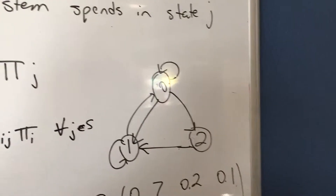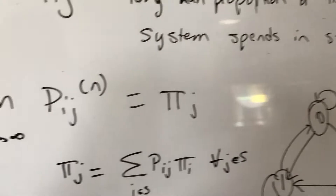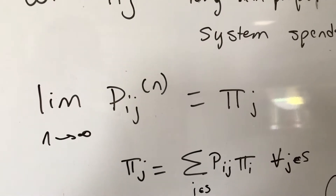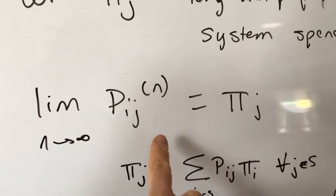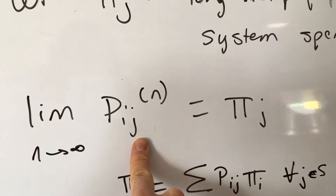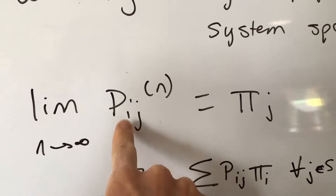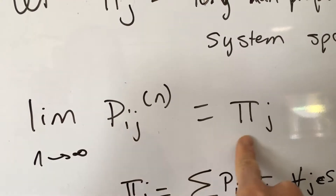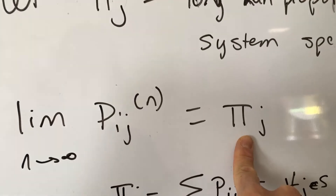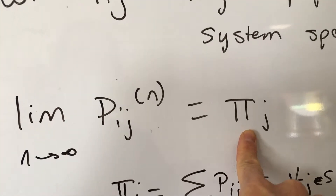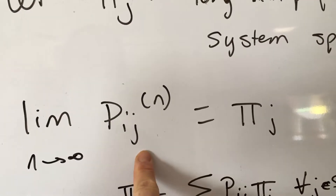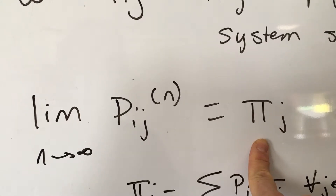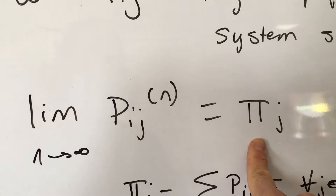We have a couple of equations. The first one: the limit, as you take an infinite number of transitions of going from some state i into j, is going to be pi of j. So, the limit of the probability that you transition into state j is pi of j, which also gives you the proportion of time you're spending in state j.